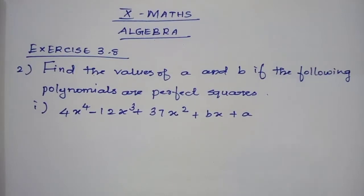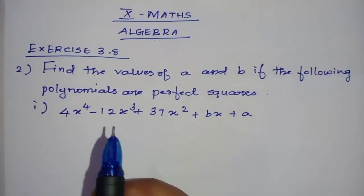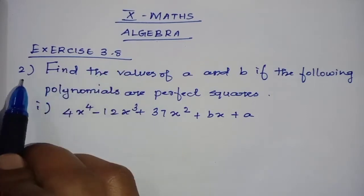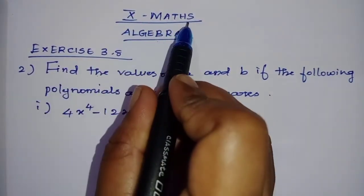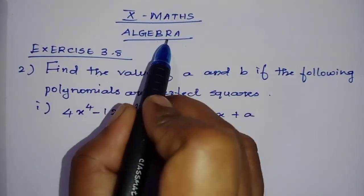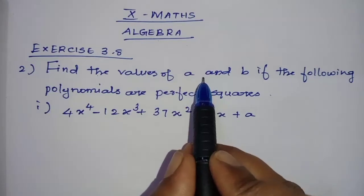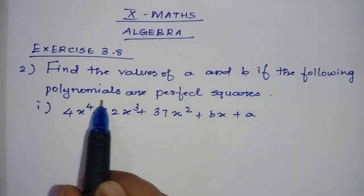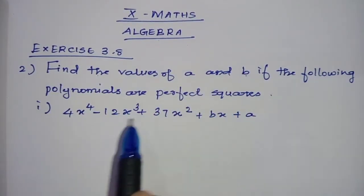Hi students, welcome to Benimax. In this video, I am going to teach exercise 3.8 second sum from 10th standard Chapter Algebra. Find the values of A and B if the following polynomials are perfect squares.